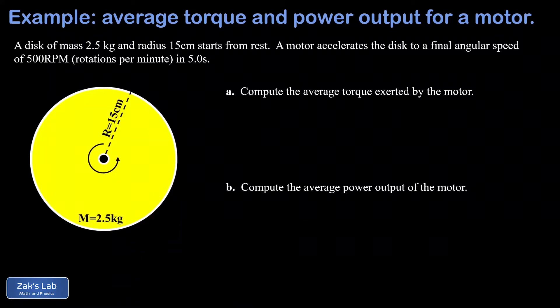In this video, we're looking at a heavy disc with a given mass of 2.5 kilograms, a given radius of 15 centimeters, and this disc is accelerated by a motor to a known final angular velocity of 500 RPMs in five seconds.